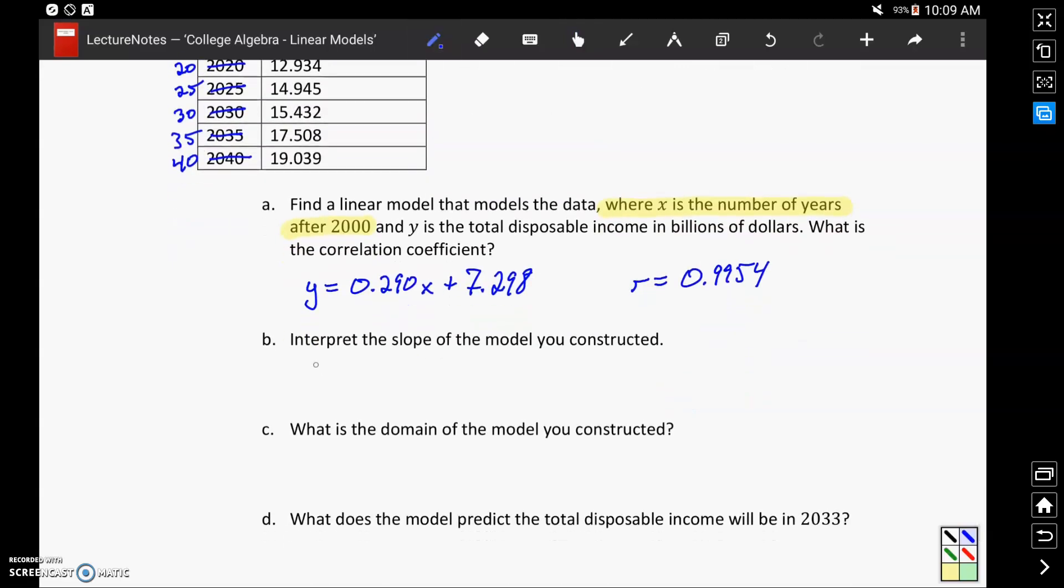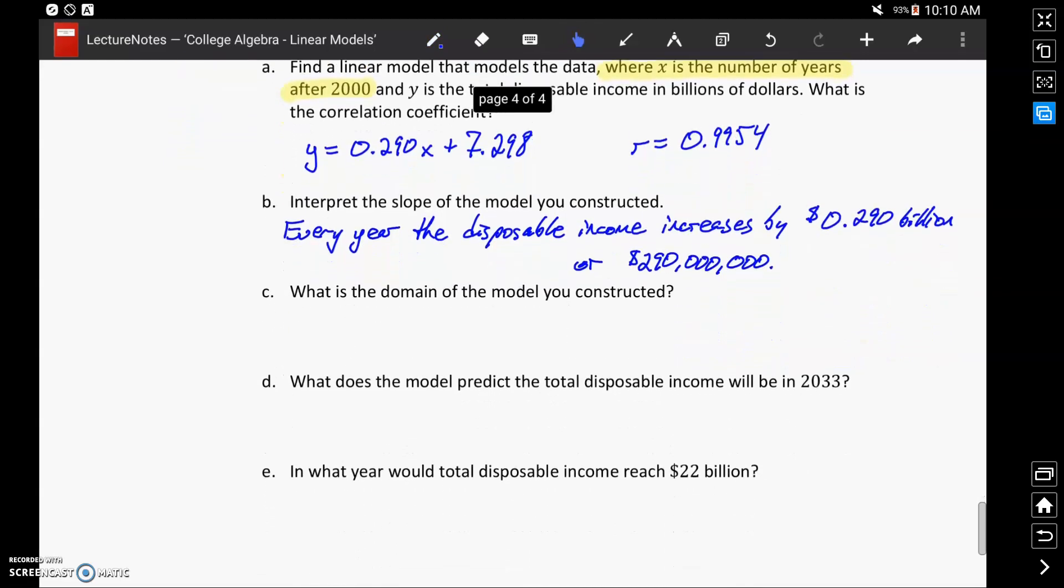In Part B, we're asked to interpret the slope. So in this case, as our X value increases by 1, so let's change that a little bit. Let's say every year, our Y variable is going to change by 0.290. So the disposable income increases, since we have a positive slope, by 0.290 billion dollars, or we could rewrite that as 290 million dollars. The slope tells us, as our X value increases by 1, how much our Y value changes.